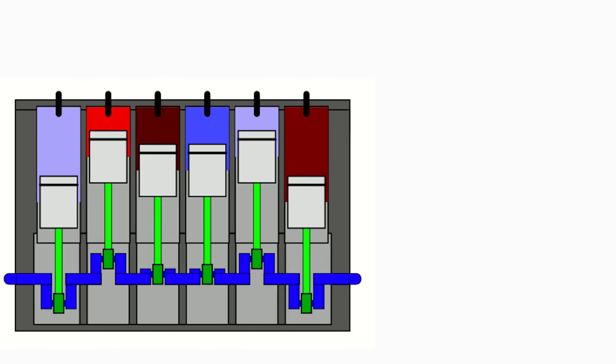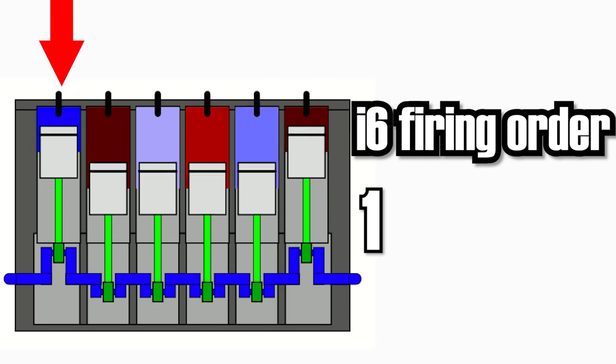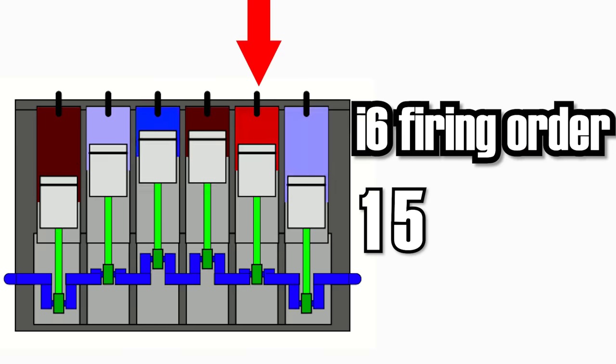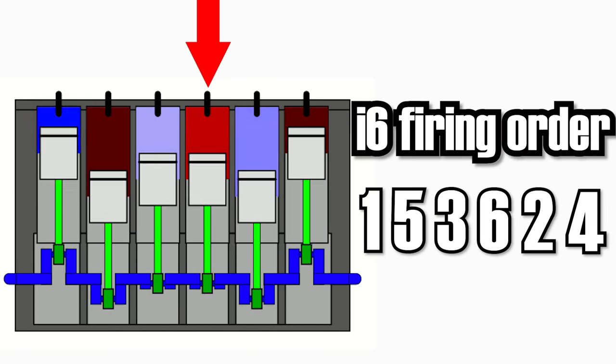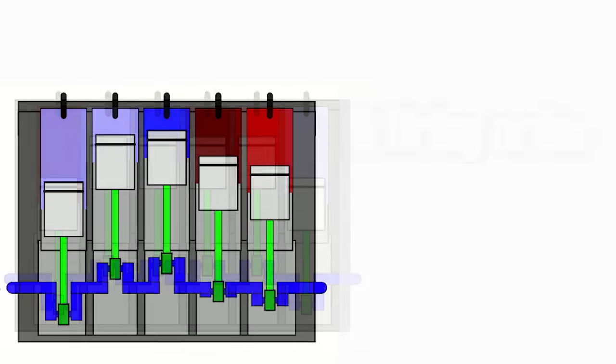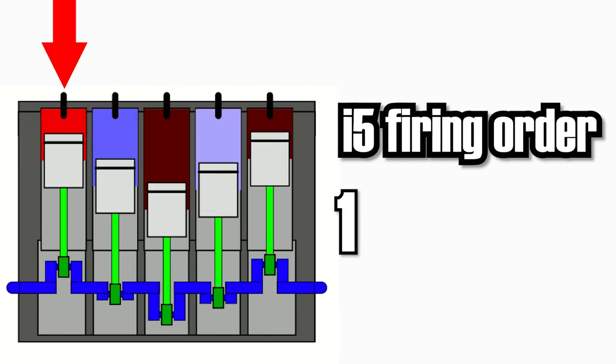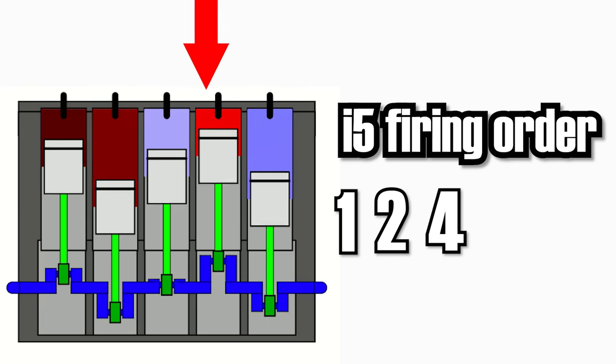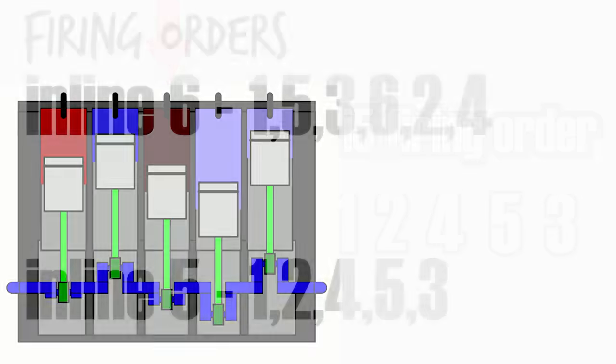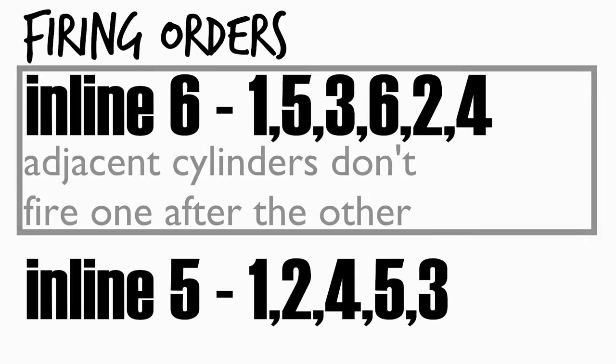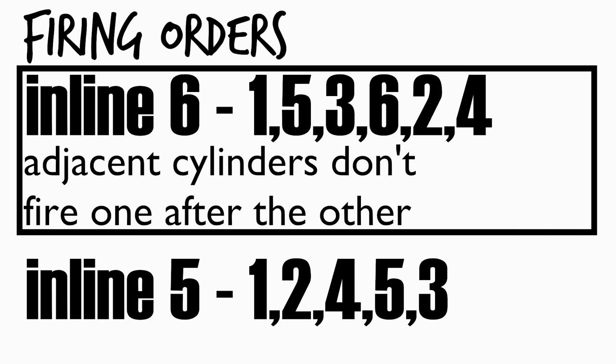The answer lies in the firing order of the engine. A typical Inline 6 has a firing order of 1, 5, 3, 6, 2, 4. Whereas a typical Inline 5 has a firing order of 1, 2, 4, 5, 3. As you can see, in the Inline 6 adjacent cylinders never fire one after the other, but in the Inline 5 they do.